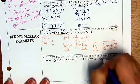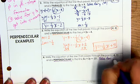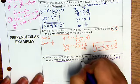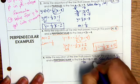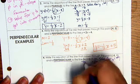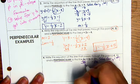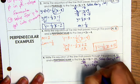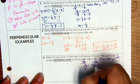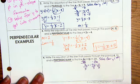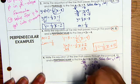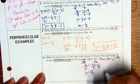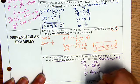So again, solve for y first. So I'm going to subtract 5x. Subtract 5x. 3y equals negative 5x minus 21. Divide by 3 to everything. Y equals negative 5 thirds x minus 7.